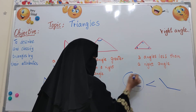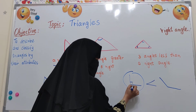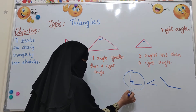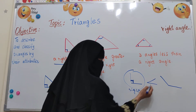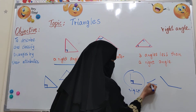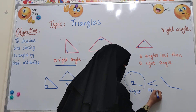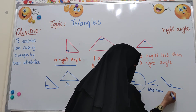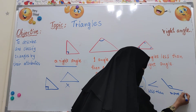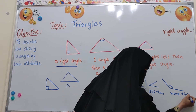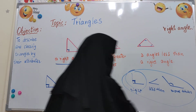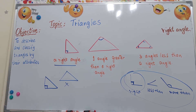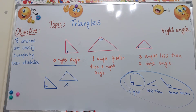Remember: if you have a square corner this is called a right angle, whereas this one is called less than a right angle, and this one is called more than a right angle. So this is what you are learning — how to describe and classify triangles by their attributes.